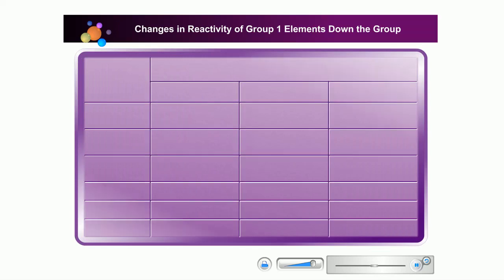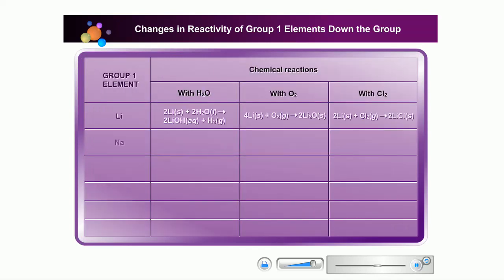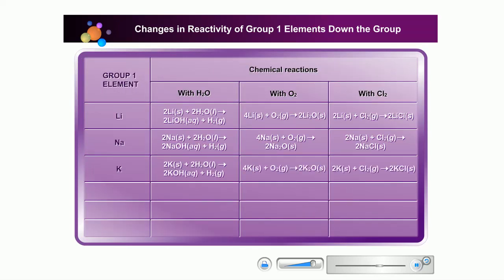Can you predict the chemical reaction of rubidium, cesium, and francium with water, oxygen, and chlorine?